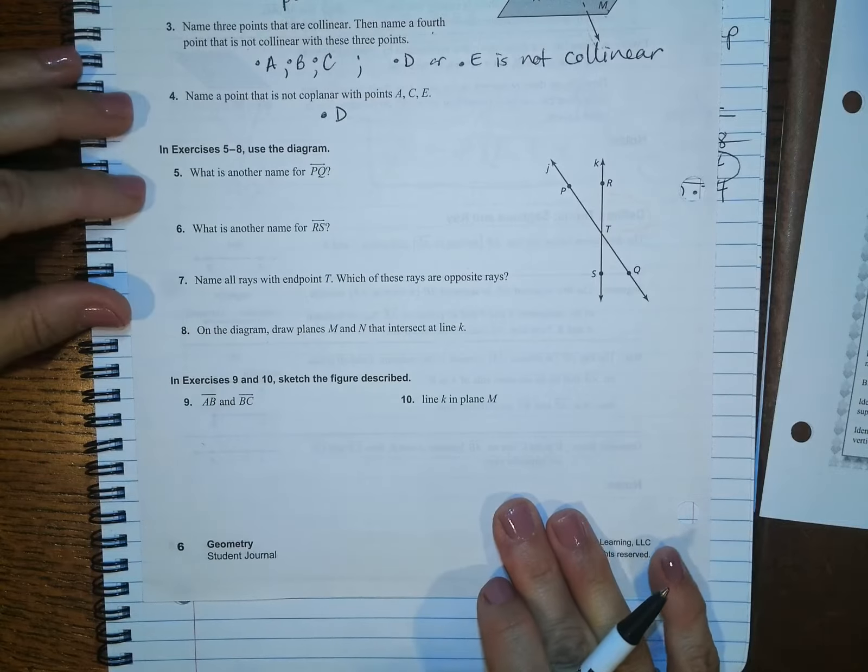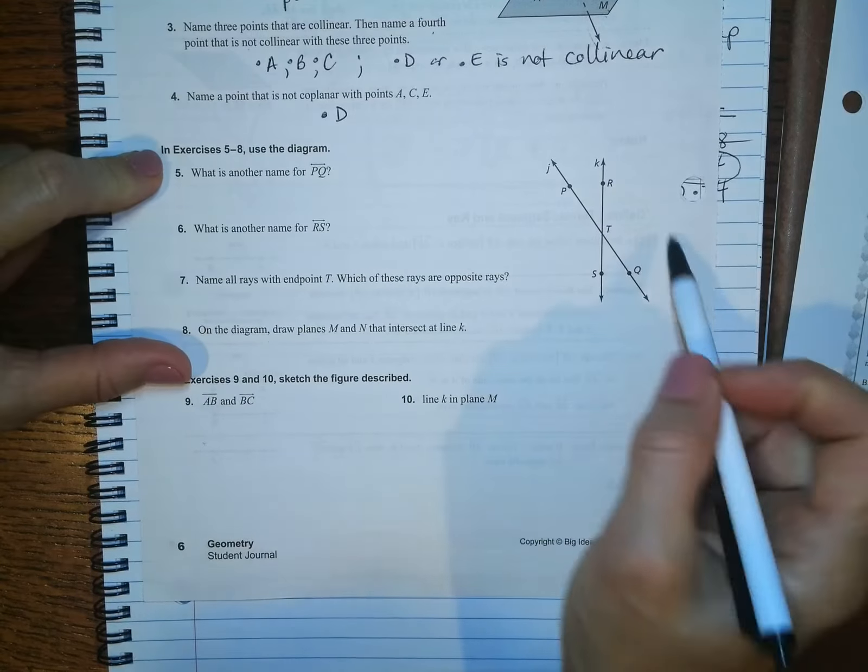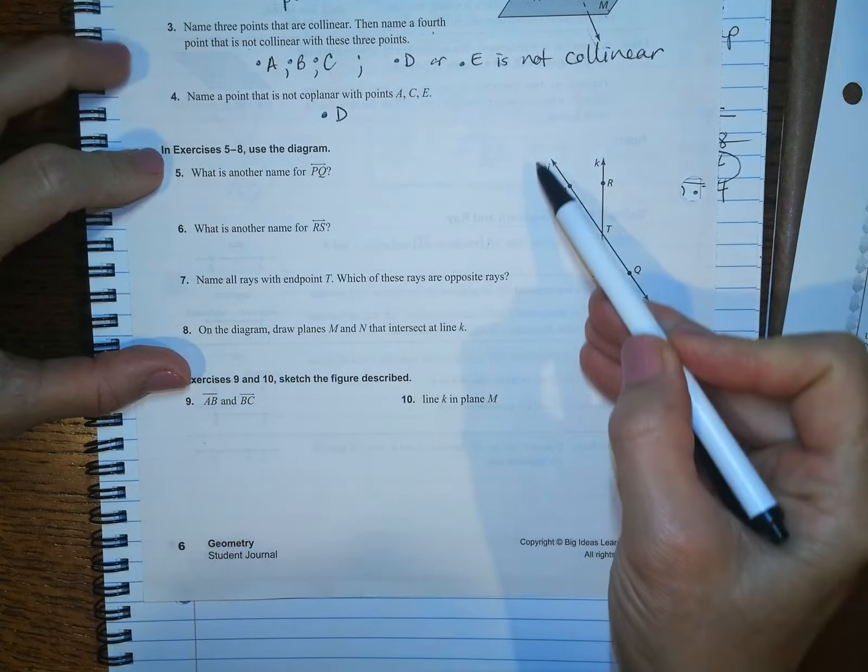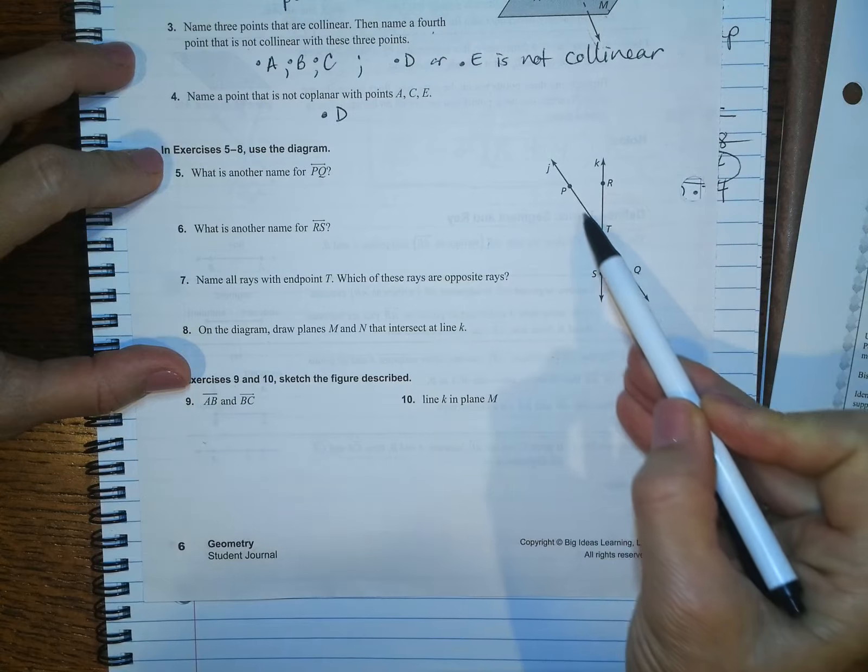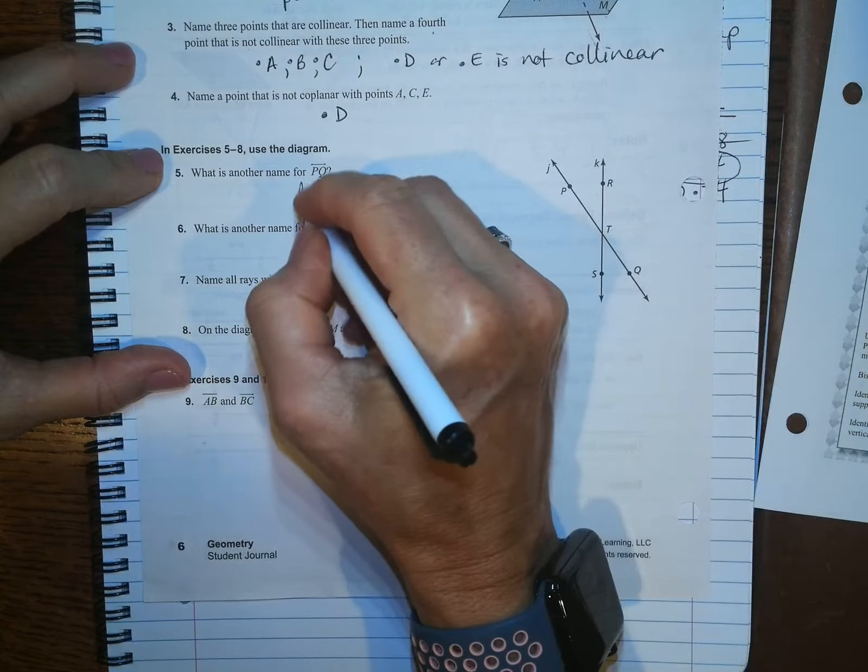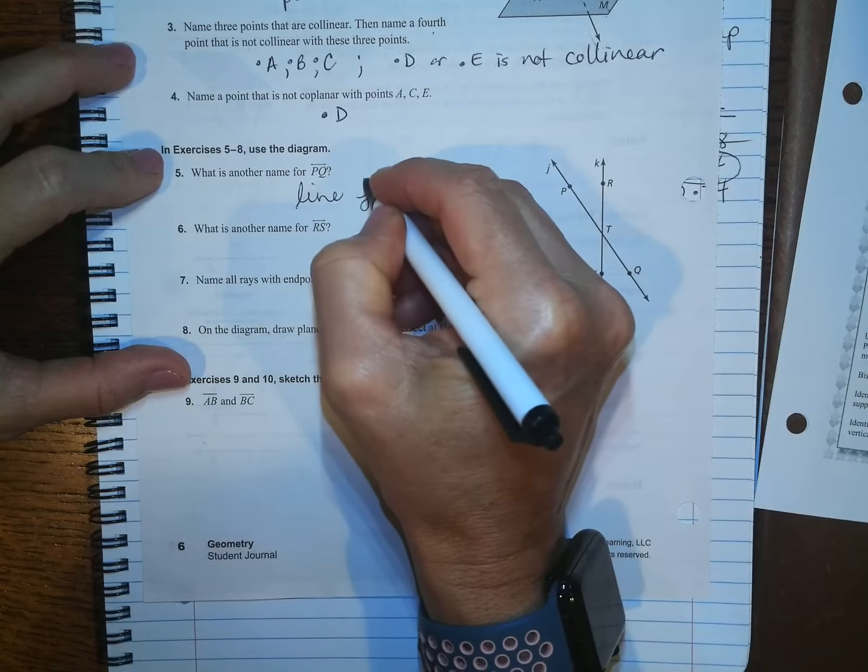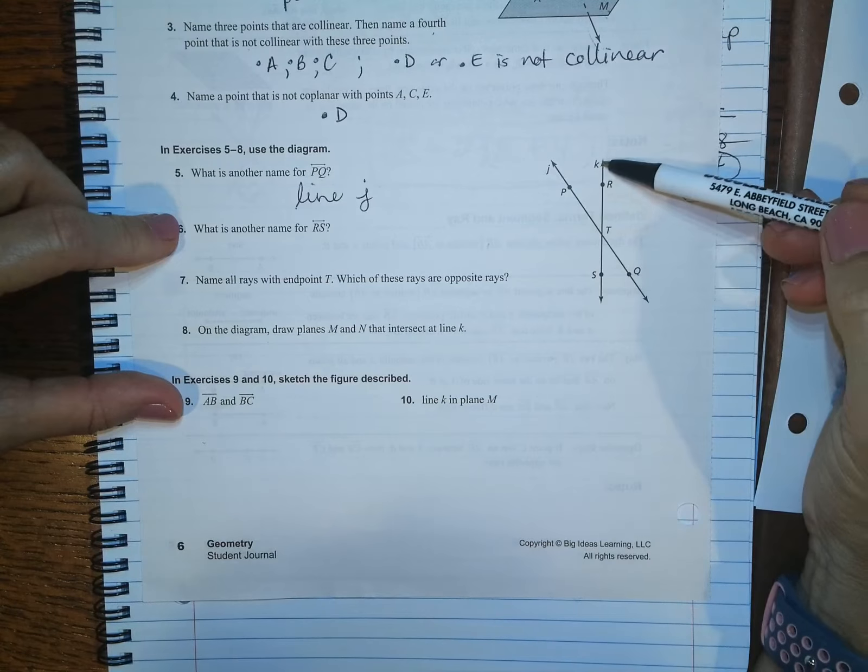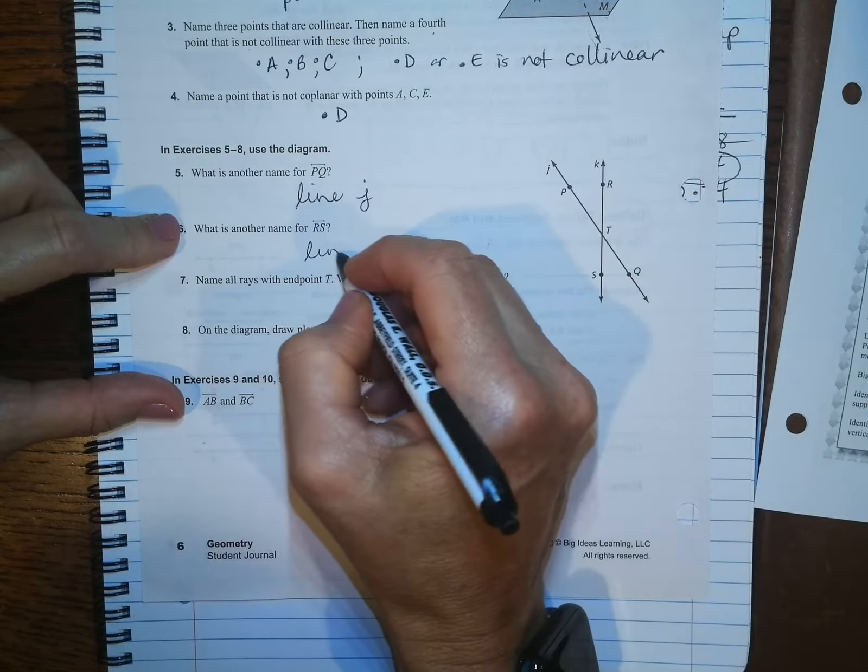Hopefully you're getting this. Okay. Now, we're going to use this diagram here to find another name for PQ. So here's PQ. I look up here. There's a little J. So this is line J. Another name for RS. So here's RS. It's line K.